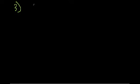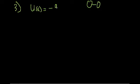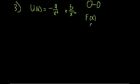This example says that the potential energy U of x between two atoms in a diatomic molecule can be expressed approximately with the equation negative A over x to the 6th plus B over x to the 12th, where A and B are just constants. For the first part of this problem, we need to do two things: figure out an expression for the force as a function of x, and show that the equilibrium separation of these two atoms, x₀, is equal to (2B/A) raised to the 1/6 power.